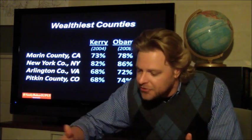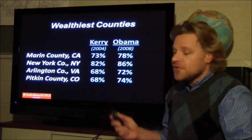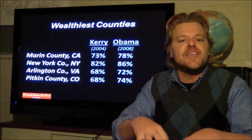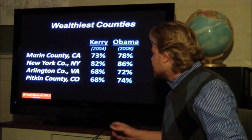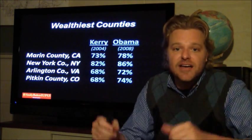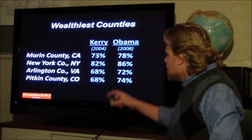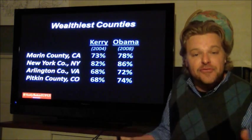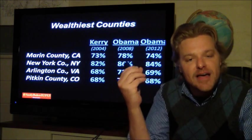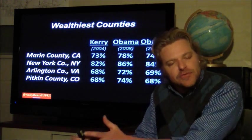Once you're over a million, five million, ten million dollars — let's look at four very wealthy counties: Marin County, California, near Silicon Valley with a lot of venture capitalists; New York County, New York — Manhattan; Arlington County, with a lot of lobbyists and politicians near Washington D.C.; and Pitkin County, Colorado — the ski slopes of Aspen. Comparing Kerry to Obama, these counties are very much Democratic strongholds. However, Obama actually lost a little bit of the gain he earned in 2008, which is characteristic across all these wealthy counties — a shift back closer towards the middle.